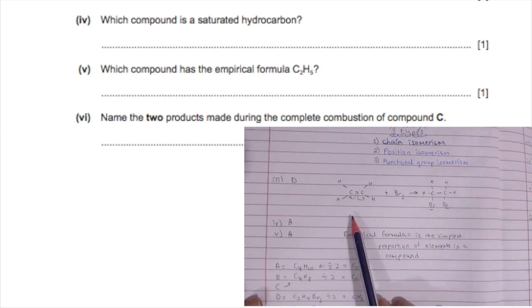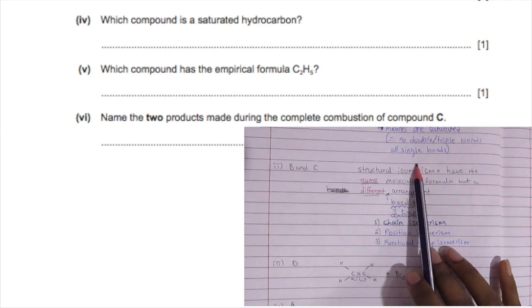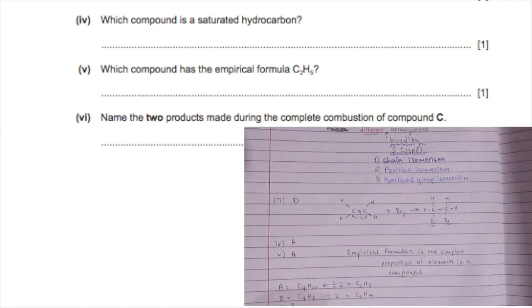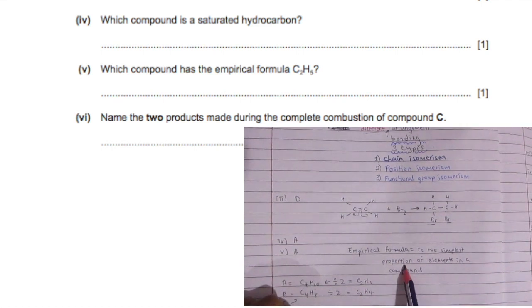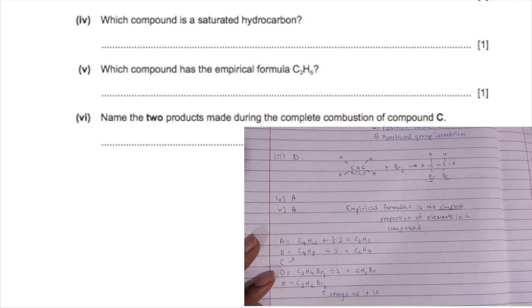Which compound has the empirical formula C2H5? That would also be A, because empirical formula is the simplest proportion of an element in a compound. For A, which has four carbons and ten hydrogens, you can simplify by dividing by two to get C2H5.